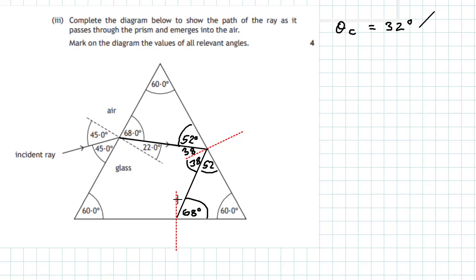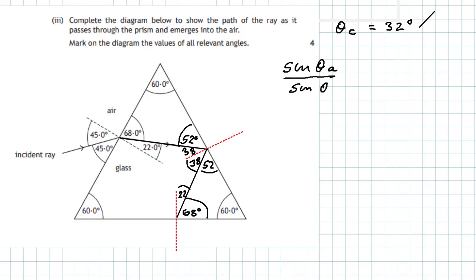We want to find the angle in the glass so we can find the emergent angle into the air. The normal and the edge of the prism are 90 degrees, so if the triangle angle is 68 degrees, then the angle inside here between the normal and the prism must be 22 degrees. Now, 22 degrees is less than the critical angle, so the ray of light will emerge from the prism. We apply Snell's law: sin(theta air) divided by sin(theta glass) equals the refractive index. Sin(theta air) divided by sin(22°) equals 1.89.